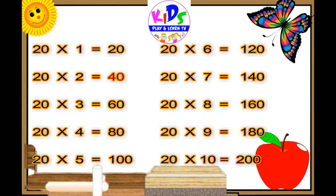20 ones are 20. 20 twos are 40. 20 threes are 60. 20 fours are 80. 20 fives are 100. 20 sixes are 120. 20 sevens are 140. 20 eights are 160. 20 nines are 180. 20 tens are 200.